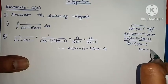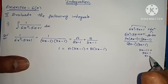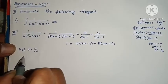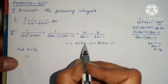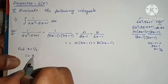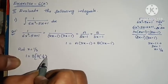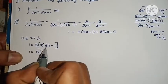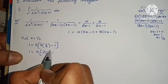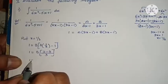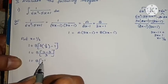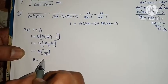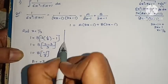To find B: put 3x minus 1 equals 0, so x equals 1 by 3. Substituting x equals 1 by 3: 1 equals B into (2 into 1/3 minus 1), which is B into (2/3 minus 1). Taking LCM 3: 1 equals B into (2 minus 3) by 3, giving 1 equals minus B by 3. Therefore B equals minus 3.